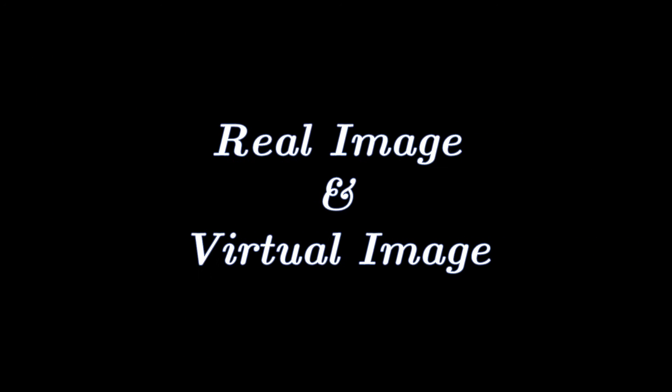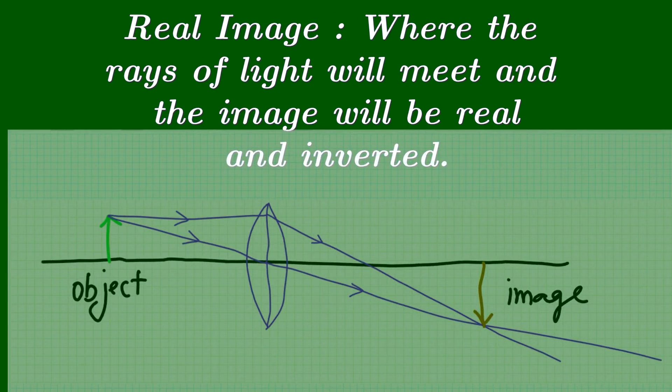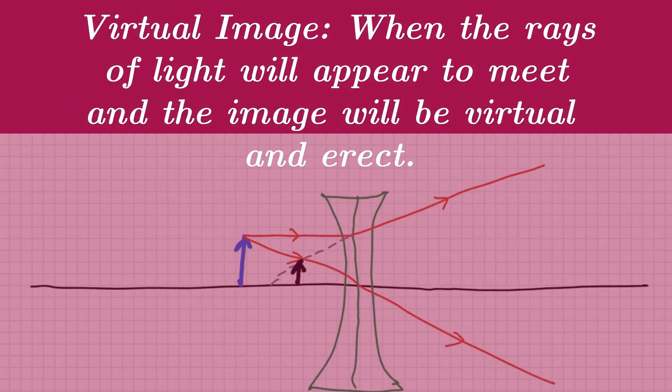In this case, the refracted rays meet really on the other side of the convex lens to form the real image. Sometimes we use concave lens, then the refracted rays will appear to meet on the same side of the object to form the virtual image.